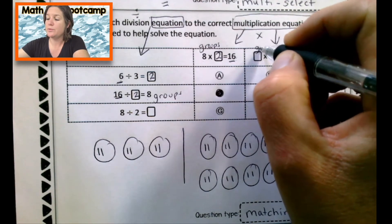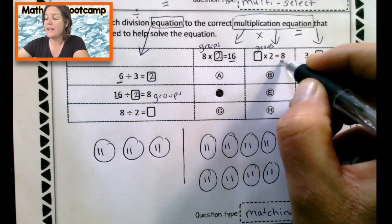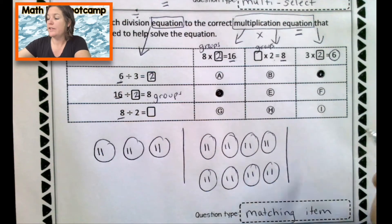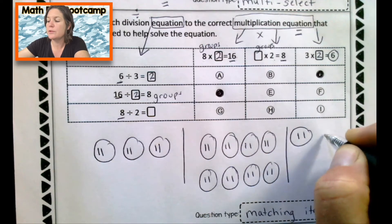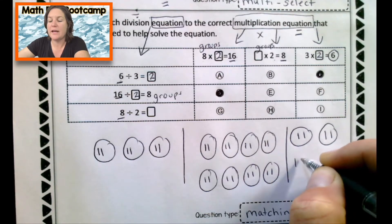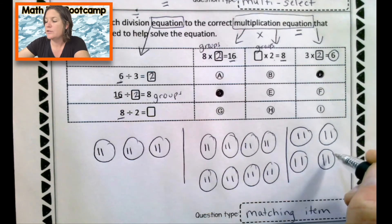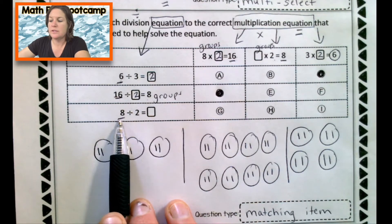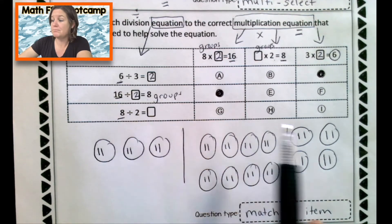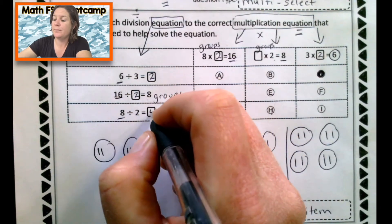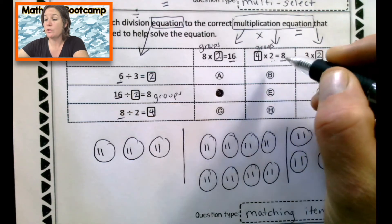So this would be our groups of two in each equals a total of eight. So here we have eight total. Let's put two in each to see how many groups we're going to get. One, two, there's a group. Three, four, there's a group. Five, six, there's a group. Seven, eight, there's a group. So we have eight total divided into groups of two or two things in each equals how many groups? One, two, three, four.